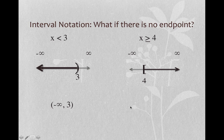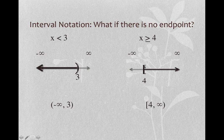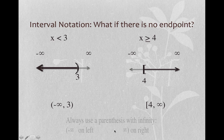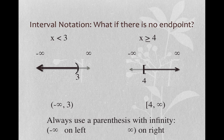Now let's look at x is greater than or equal to 4. The left endpoint is 4 — since it's an equal-to sign, we use a closed bracket. The right endpoint continues forever, so we use positive infinity. We always use a parenthesis with infinity or negative infinity. So this is written as [4, +∞). Always use a closed bracket with an equal-to sign, and always use a parenthesis with infinity.